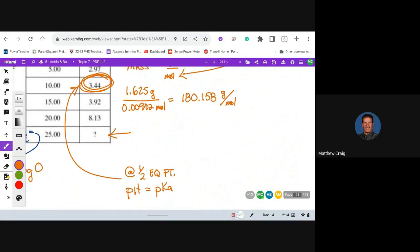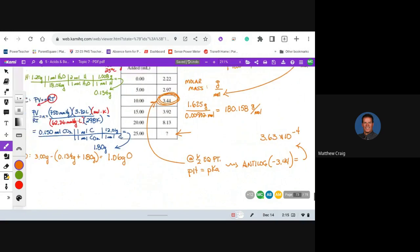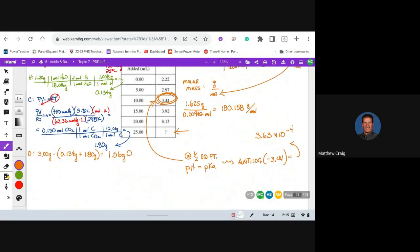And since we have 3.44, take the anti-log of the negative 3.44. 10 to the negative 3.44 gives me 3.63 times 10 to the negative 4. So there's your Ka value.